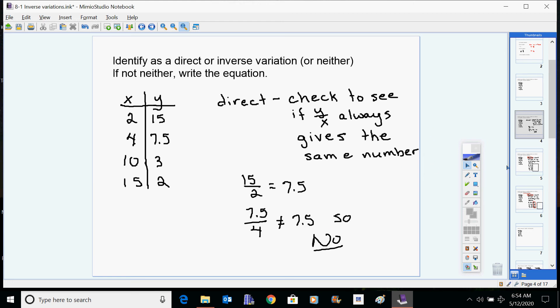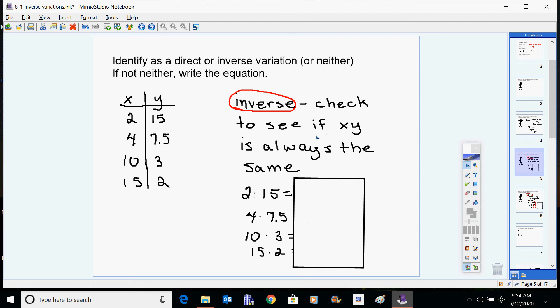So no, it's not a direct variation, and you move on. If it did come out to be 7.5, you'd need to check the other numbers too to make sure you always get the same number. So this one's not a direct variation, so we check to see if it's an inverse variation. An inverse variation, you're always checking to see if the product is the same. So checking if 2 times 15 is the same as 4 times 7.5, and if that matches 10 times 3, and if that matches 15 times 2. What we find is that in each one of these cases, we get 30. Since each one of them gives us the same exact number, it is an inverse variation.